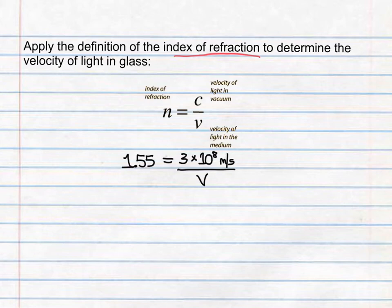Recall that n for glass is 1.55. The speed of light in a vacuum is 3 × 10⁸ meters per second. And let's solve for v. Doing some cross-multiplying and solving for v, I got v is 1.94 × 10⁸ meters per second.